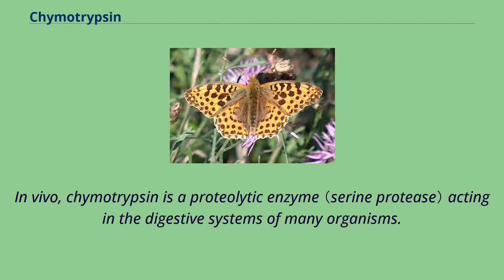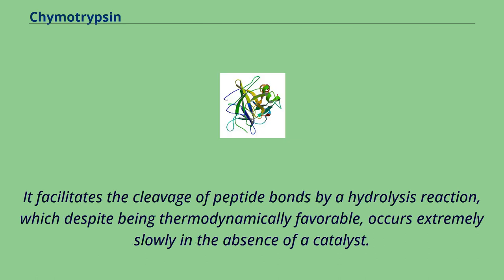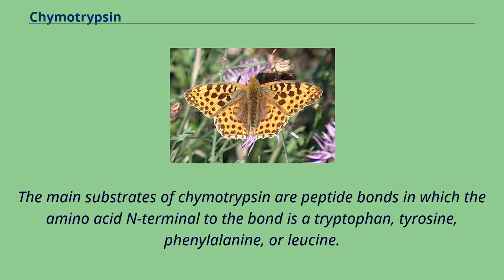In vivo, chymotrypsin is a proteolytic enzyme acting in the digestive systems of many organisms. It facilitates the cleavage of peptide bonds by a hydrolysis reaction, which despite being thermodynamically favorable, occurs extremely slowly in the absence of a catalyst. The main substrates of chymotrypsin are peptide bonds in which the amino acid N-terminal to the bond is a tryptophan, tyrosine, phenylalanine, or leucine.